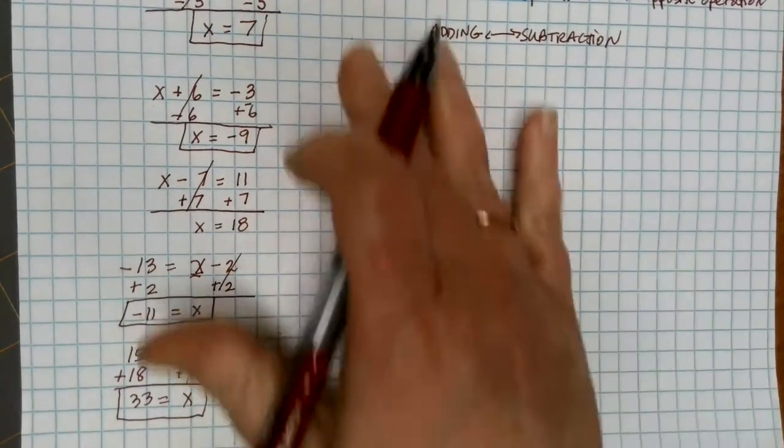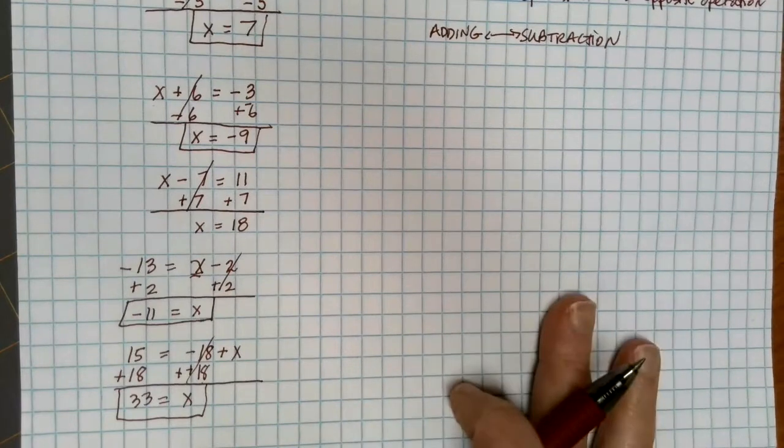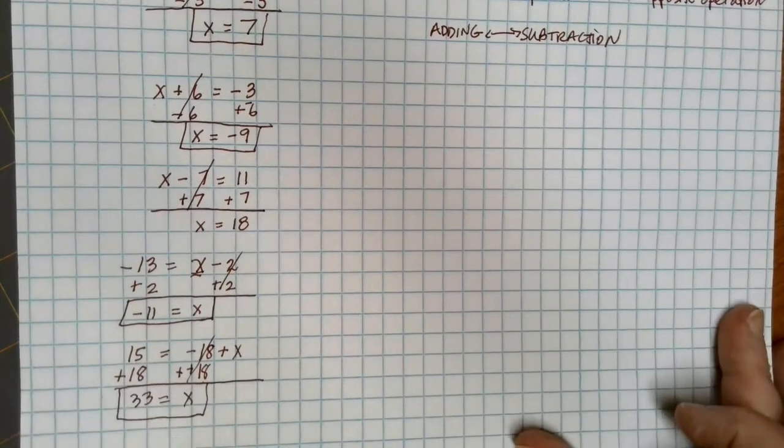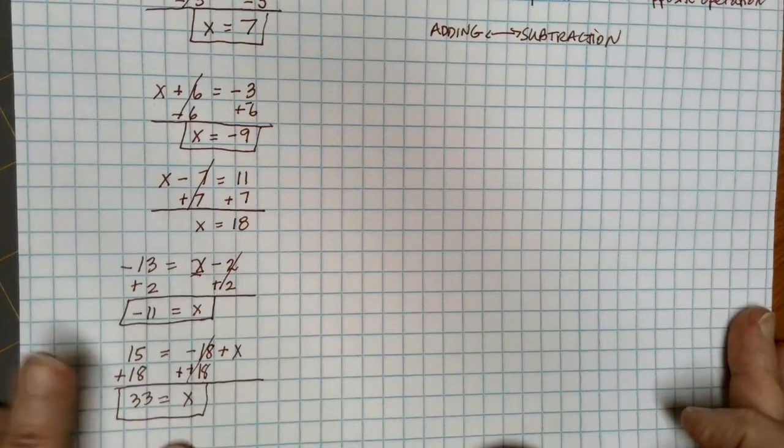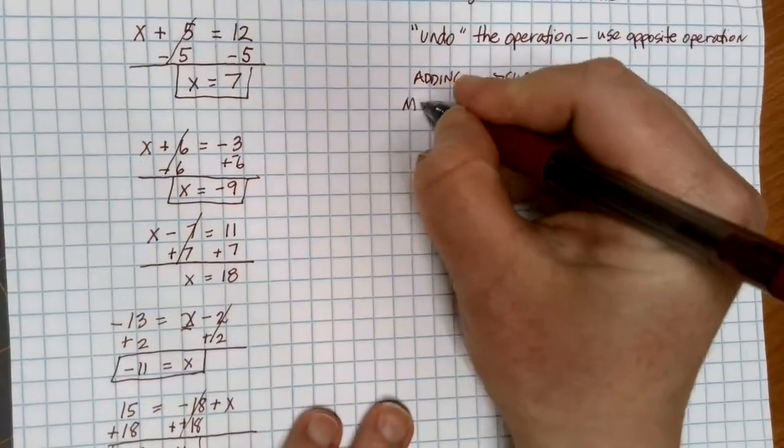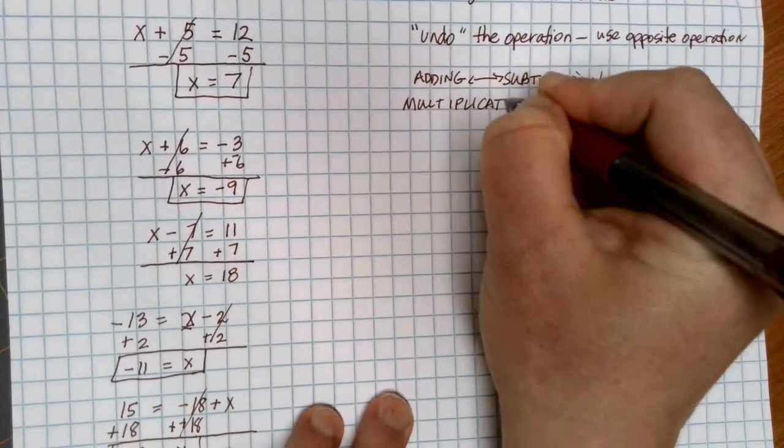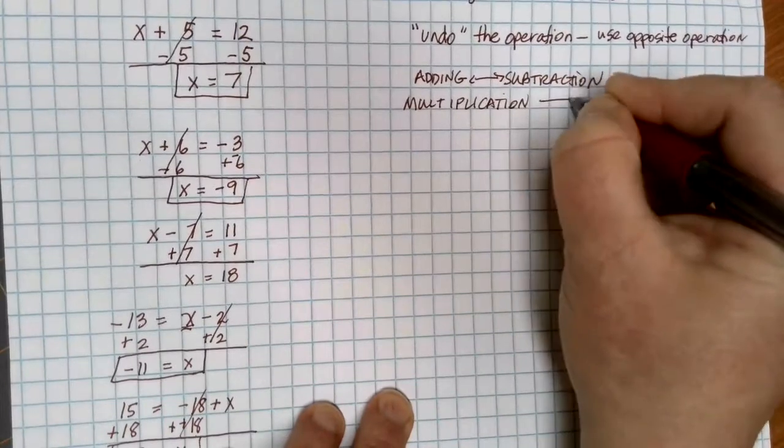Okay, so these are some examples here where we all had a bunch of different equations that had addition or subtraction, and we would get rid of whatever is on the same side of the x by doing the opposite of whatever was there. We also have opposite operations of multiplication and division.